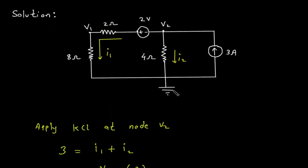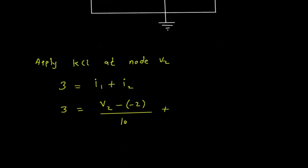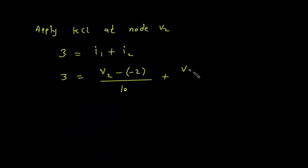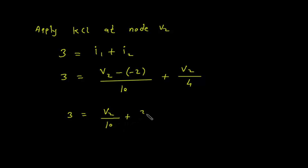I2 is V2 minus 0, divided by 4. So the full equation becomes: 3 equals V2 divided by 10 plus V2 divided by 4.